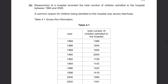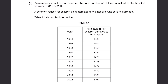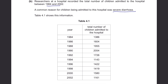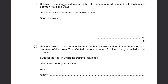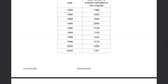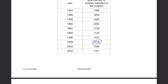Part B. Researchers at the hospital recorded the total number of children admitted between 1984 and 2002. A common reason was severe diarrhea, shown in Table 4.1. Calculate the percentage decrease in total children admitted between 1998 and 2002. In 1998 there were 1419 children, and in 2002 there were 1161 children admitted.